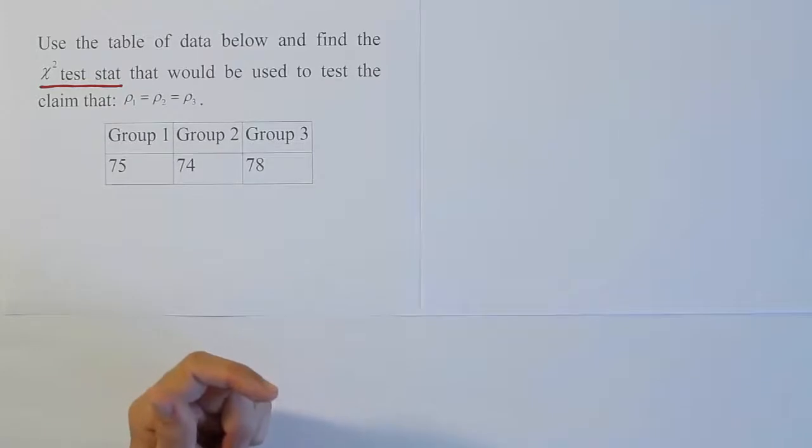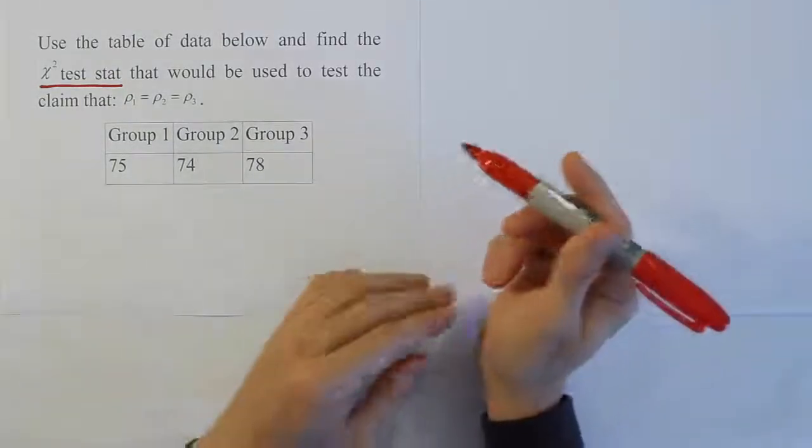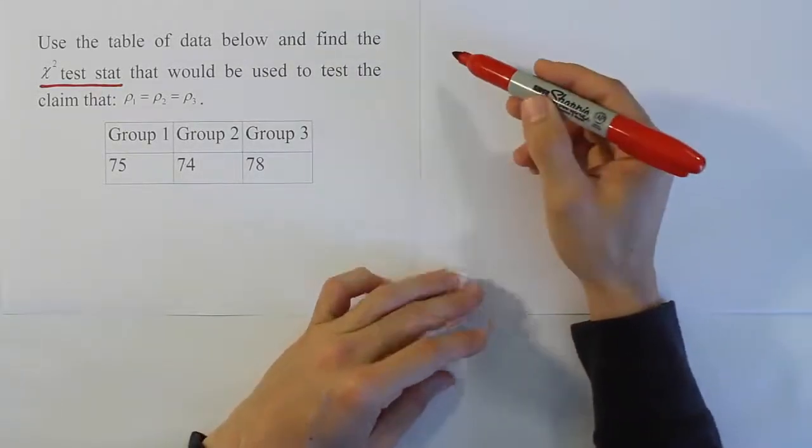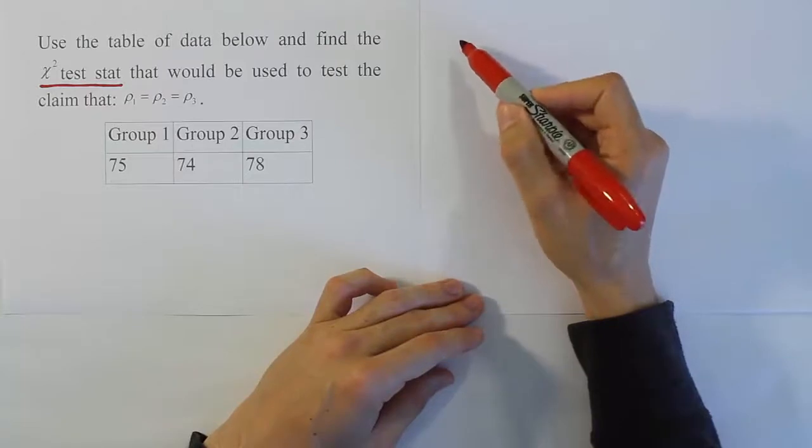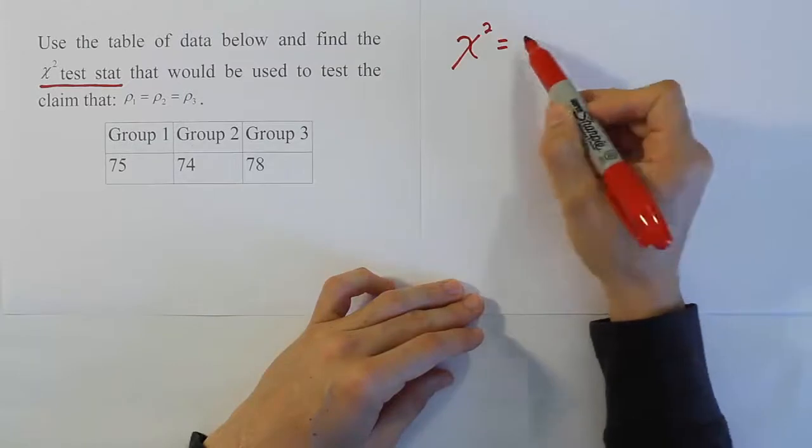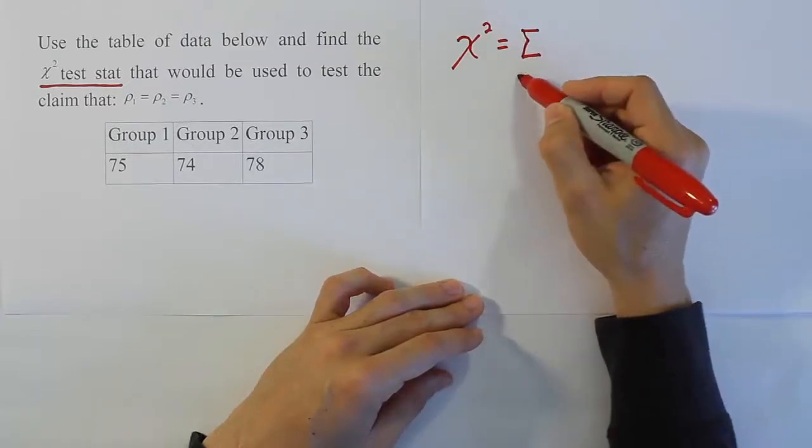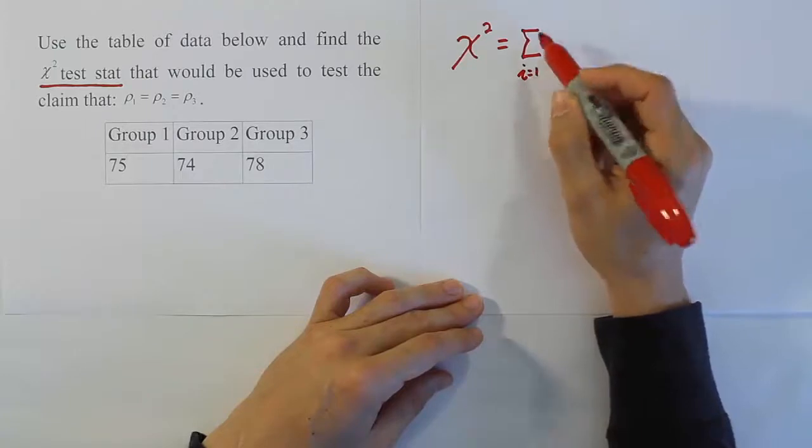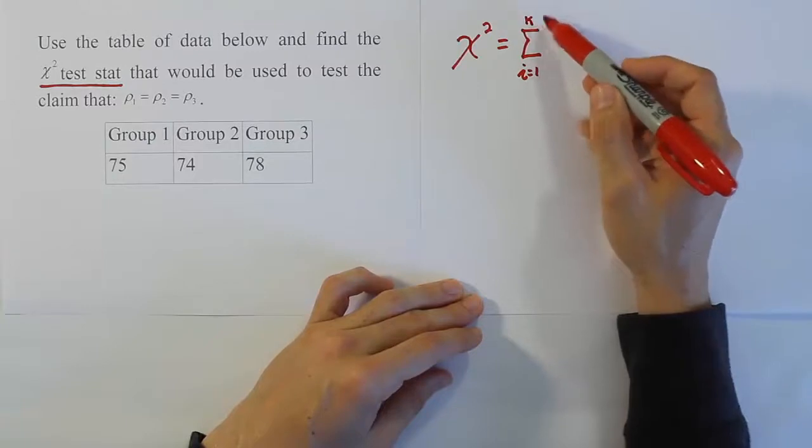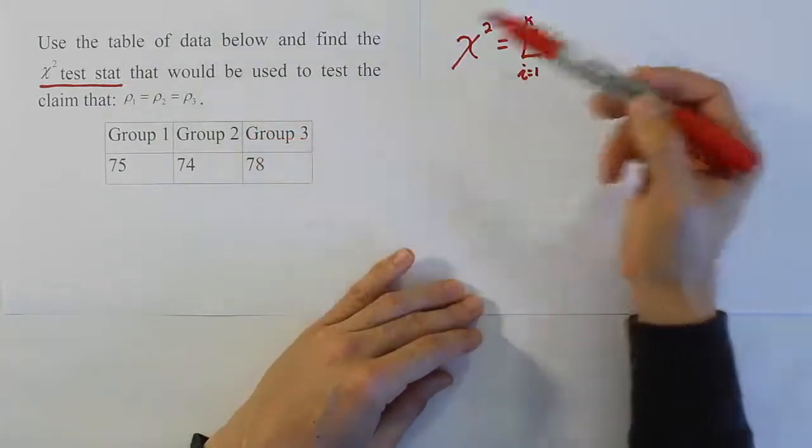What we're doing here in this problem is calculating the chi-squared test statistic for a hypothesis testing procedure where we want to say that all the proportions for the problem are equal to one another. When you look at the formula for the chi-squared test stat, it tells you what exactly we have to do to solve the problem.